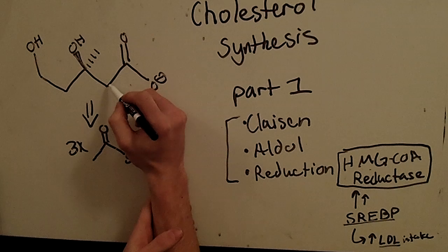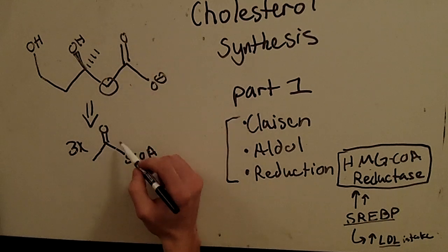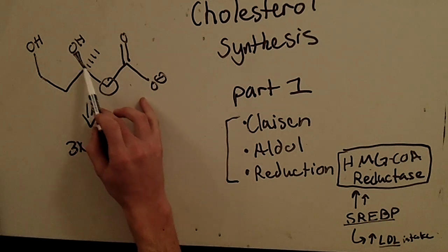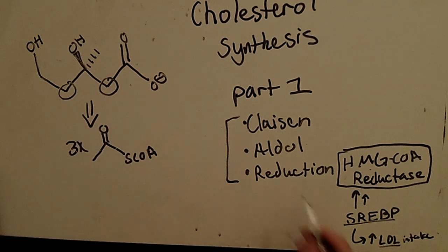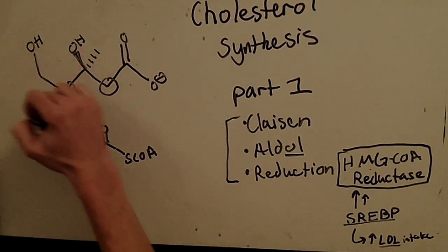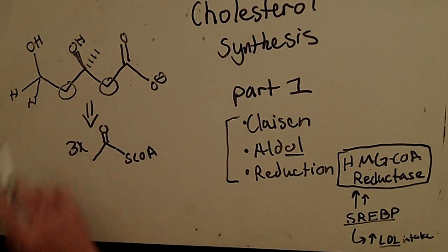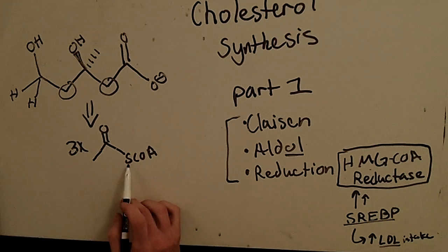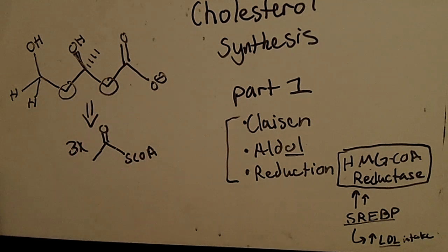The Claisen condensation forms this bond here — you can see how this could have been an acetyl-CoA with a water attack. This used to be an acetyl-CoA from Claisen condensation, and there's been an aldol reaction here that formed this and caused an alcohol. Lastly, the HMG-CoA reductase caused a double reduction at this carbonyl, which used to be an acetyl-CoA. So we have six carbons total — three times two carbons.